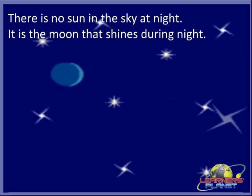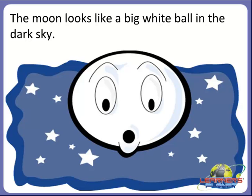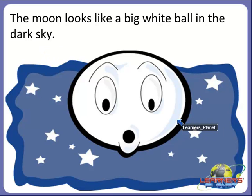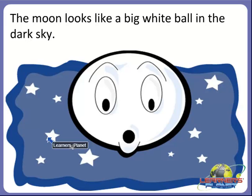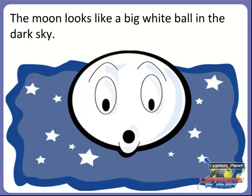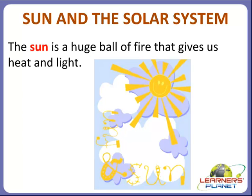Ok children. The moon looks like a big white ball in the dark sky, as you might have seen at night. We can also see stars with the moon, but there is no sun in the sky at night. Now let's study about the sun and the solar system.